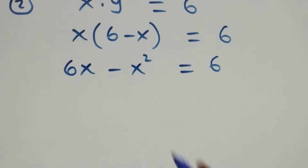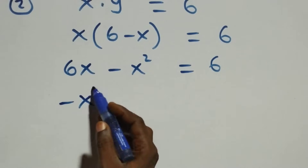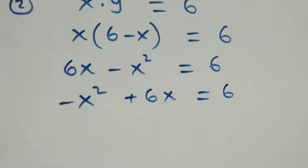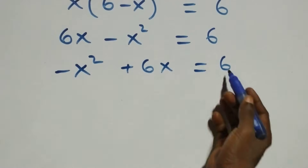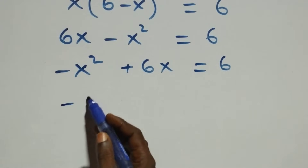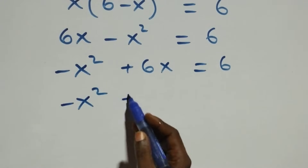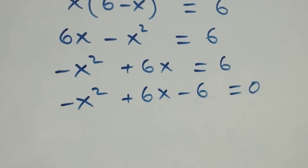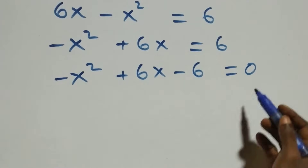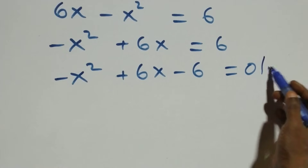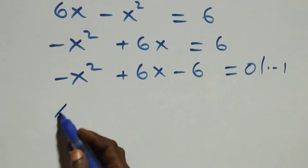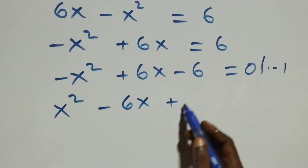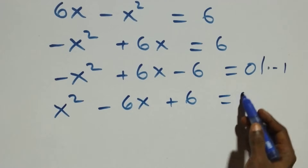Rearranging, we have minus x squared plus 6x equals 6. Taking 6 to the left-hand side gives minus x squared plus 6x minus 6 equals 0. To remove the negative sign, we multiply through by minus one, giving us x squared minus 6x plus 6 equals 0.